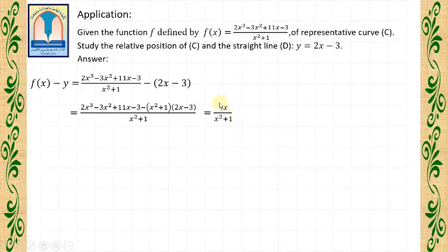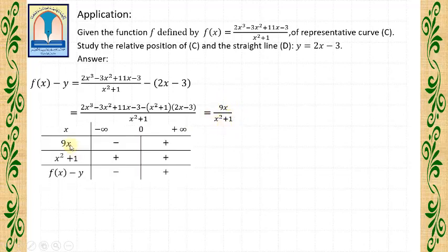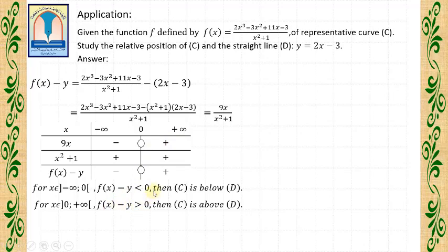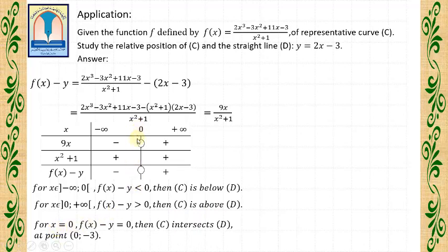Now we make the sign table for 9X / (X² + 1). 9X has 0 as a root. X² + 1 is strictly positive. This gives the sign of F(X) minus Y. For X belongs to (minus infinity, 0), F(X) minus Y is negative, so C is below line D. For X belongs to (0, plus infinity), F(X) minus Y is positive, so C is above line D. For X equals 0, F(X) minus Y equals 0, so C intersects line D at point (0, minus 3). We replace X = 0 in the equation of line D to get the point of intersection.